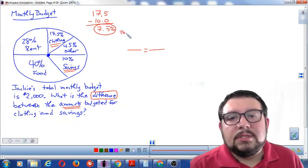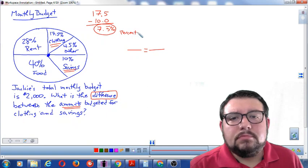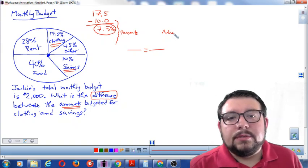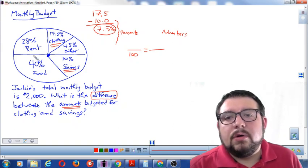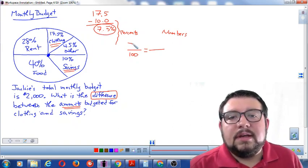One side is going to be percents, and one side is going to be numbers. A hundred percent would be the whole pie, the whole entire pie, and we want to know what would be 7.5 percent of the pie.